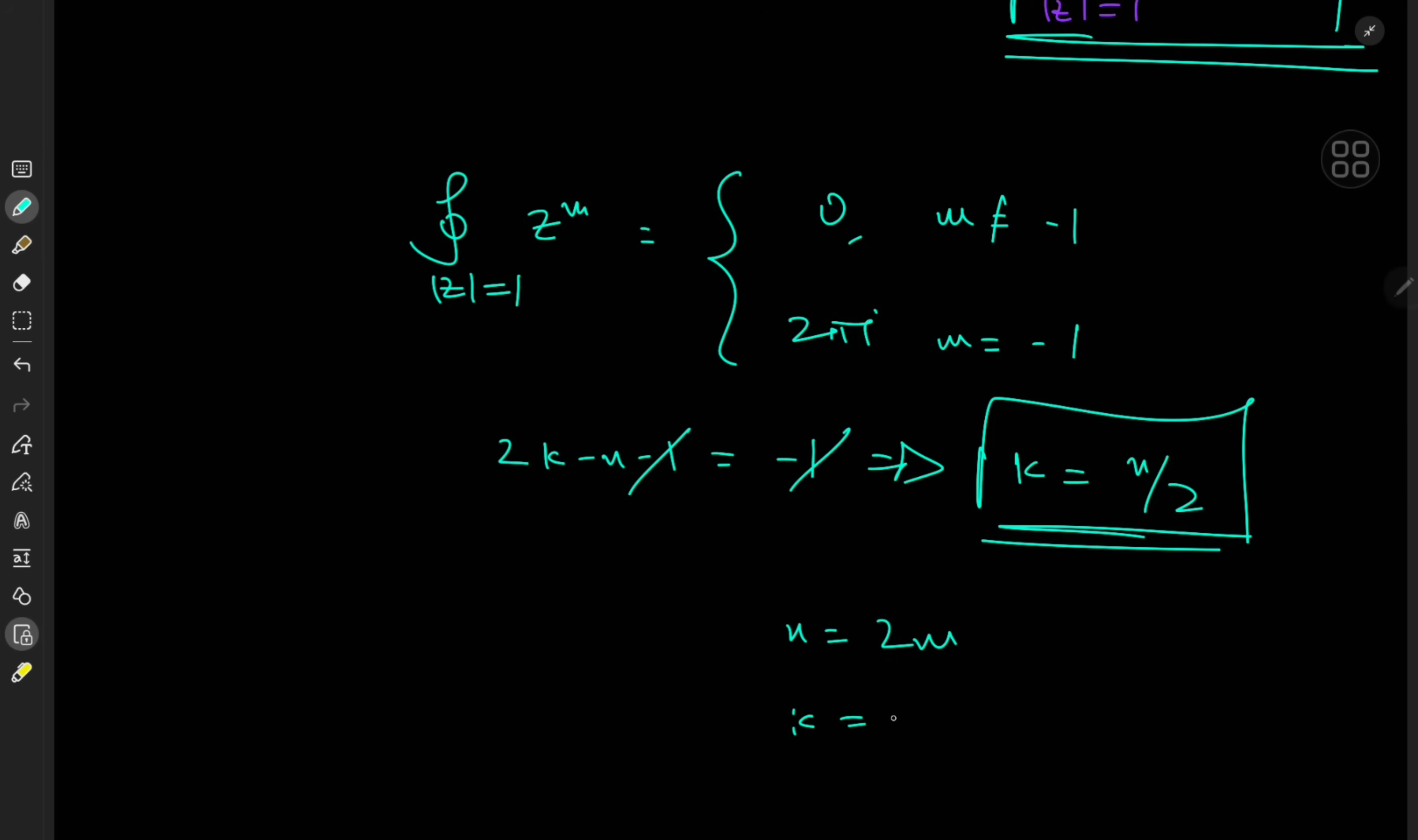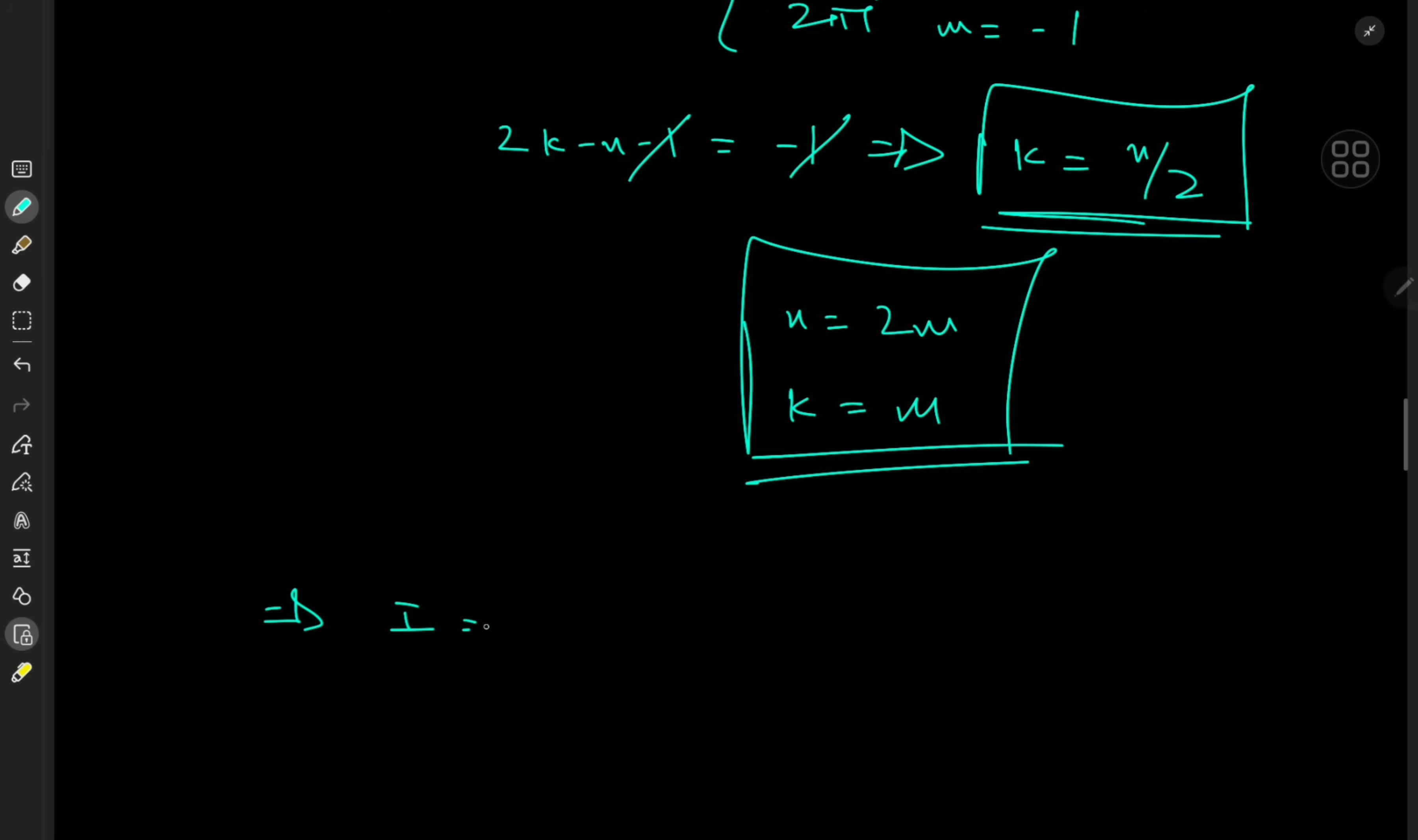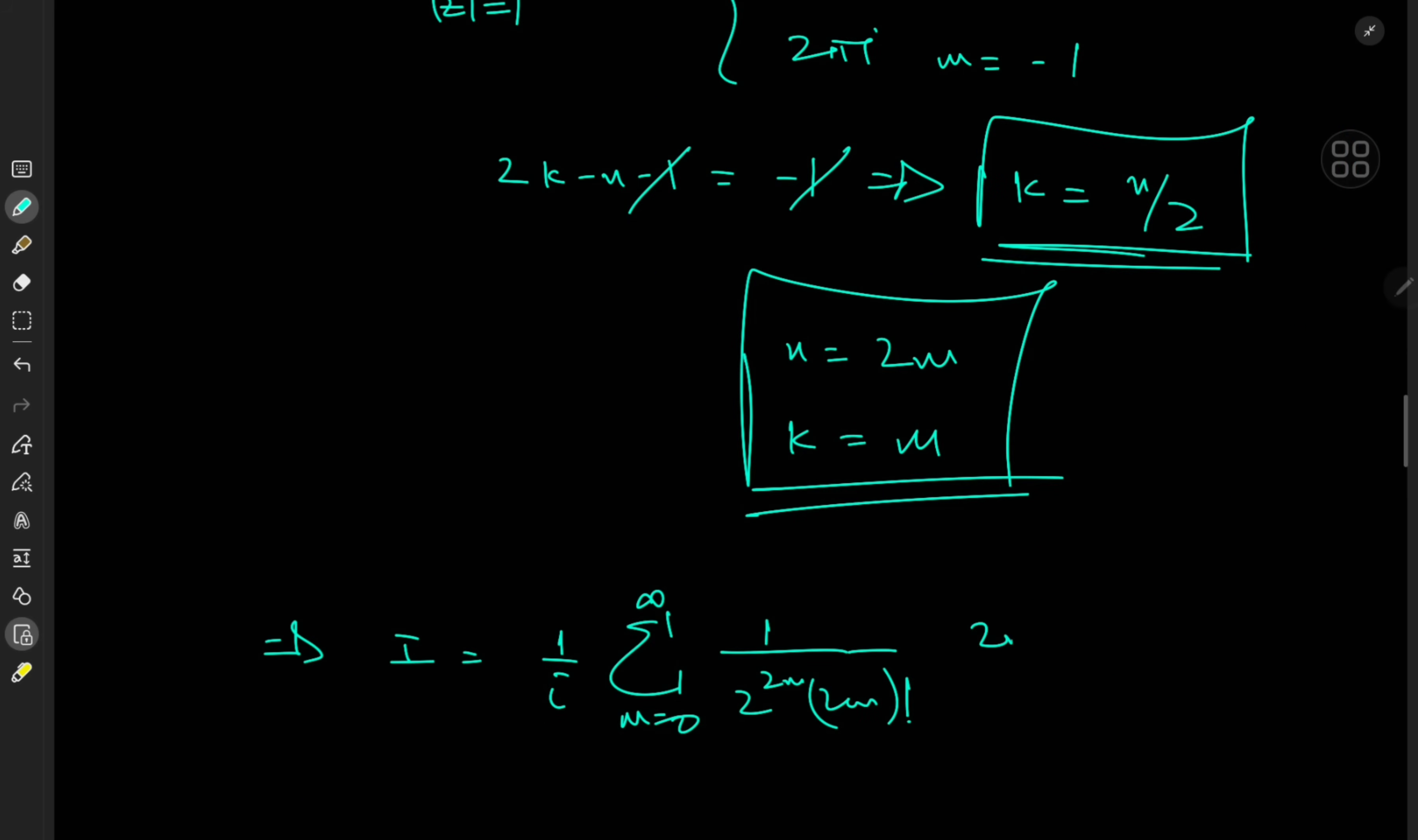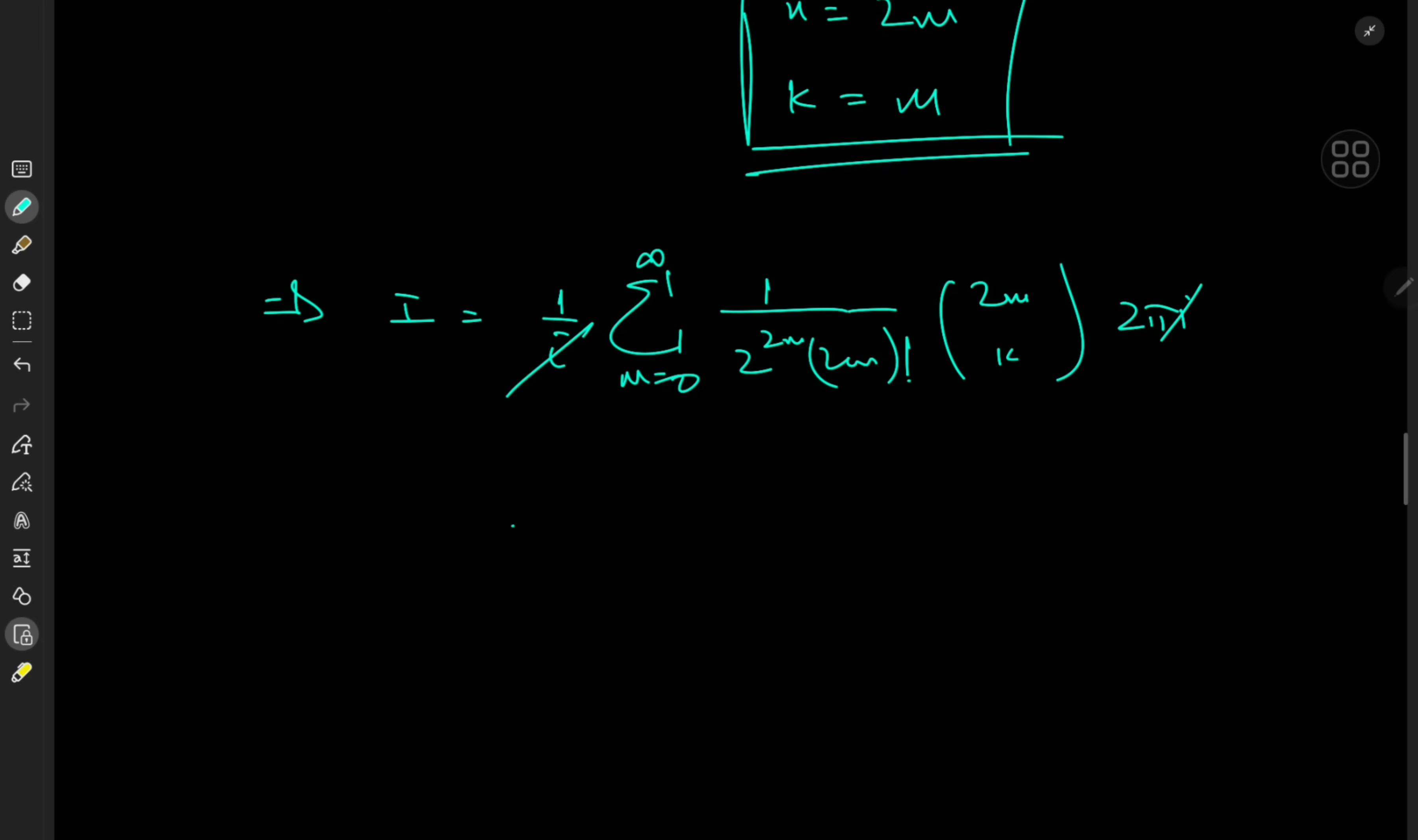And of course, k equal to m, which implies that the target integral I is now 1/i, sum over n now from 0 to infinity, 1/(2^(2m) · 2m!), and then you have this (2m choose m) factor times 2πi. And the i's cancel out quite nicely. And one of the 2's canceled out here as well.